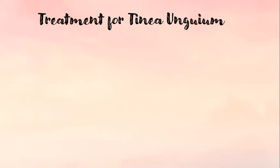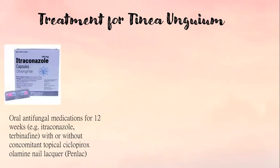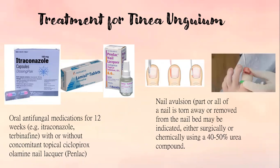The treatment for tinea unguium includes oral antifungal medications for 12 weeks, for example itraconazole and terbinafine, with or without concomitant topical ciclopirox olamine nail lacquer. Nail avulsion, in which part or all of the nail is removed from the nail bed, may be indicated either surgically or chemically using a 40-50% urea compound.